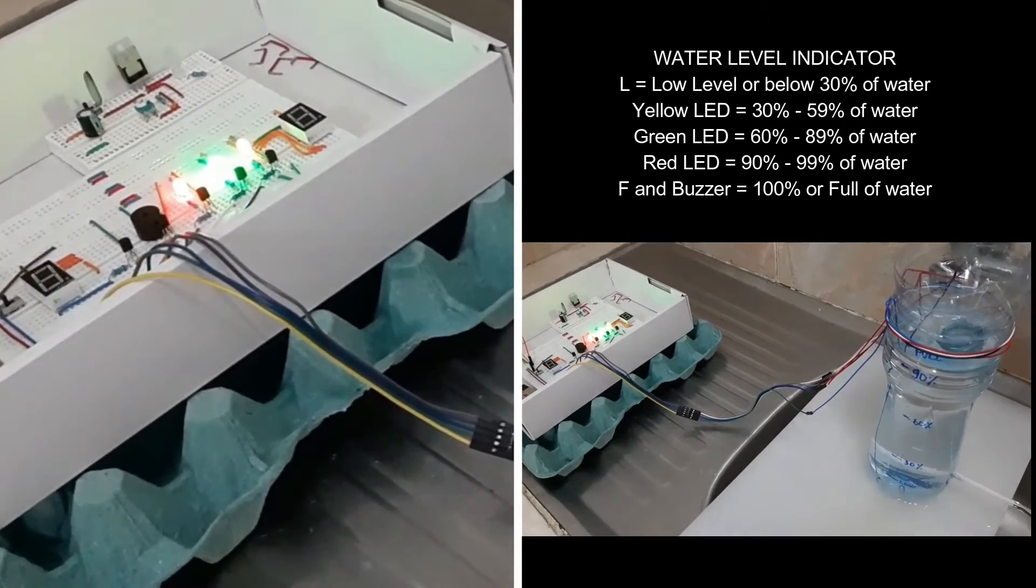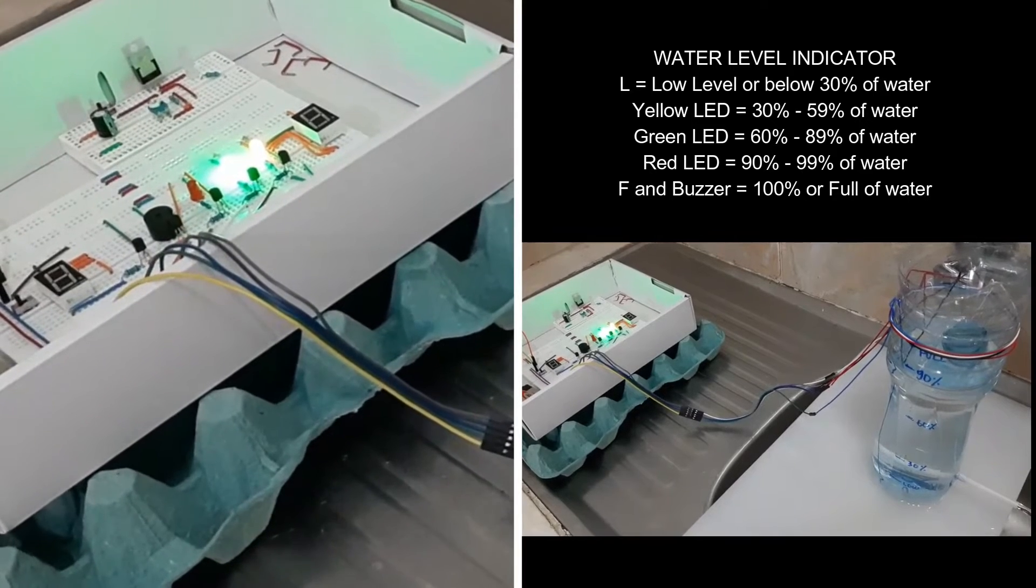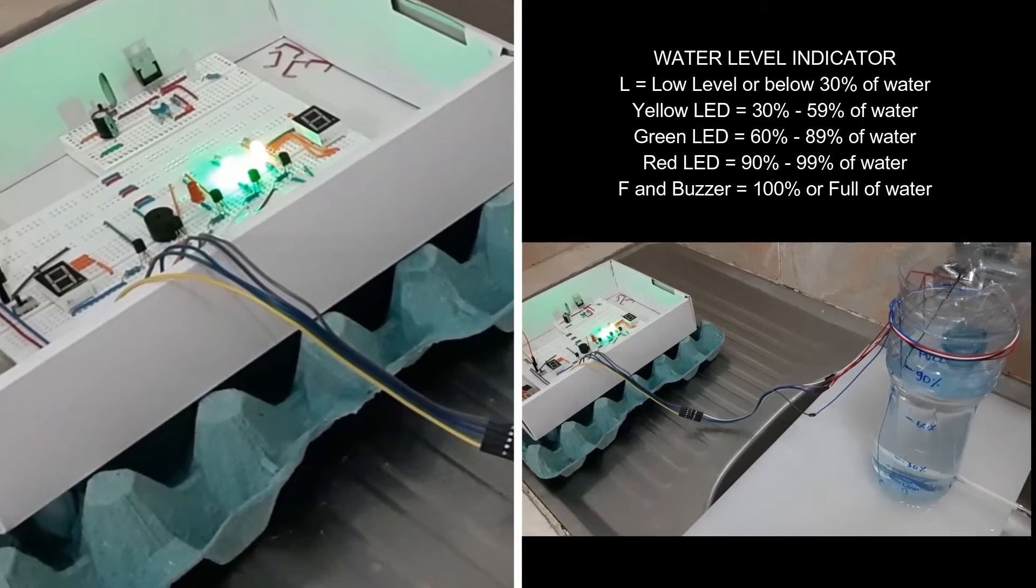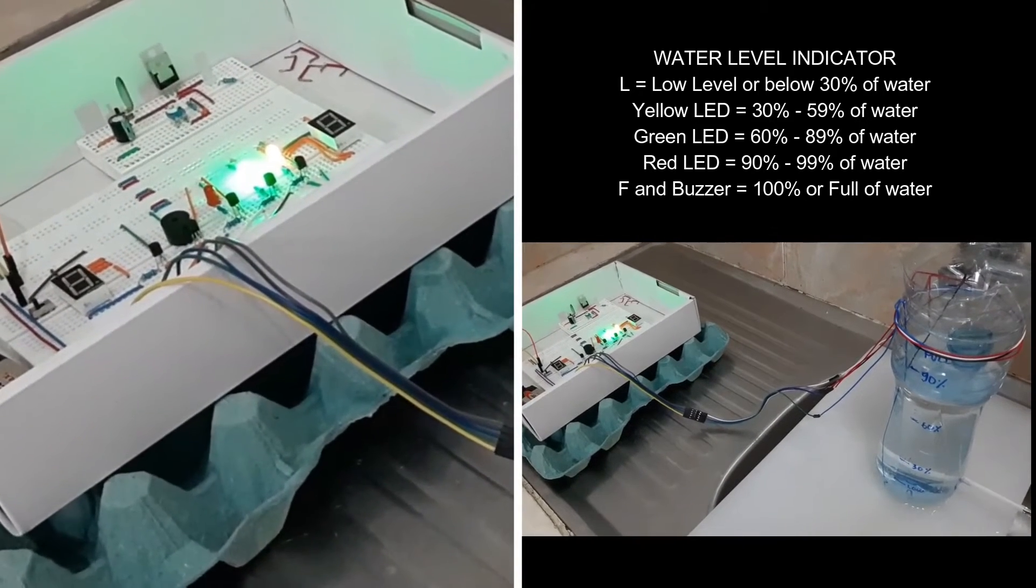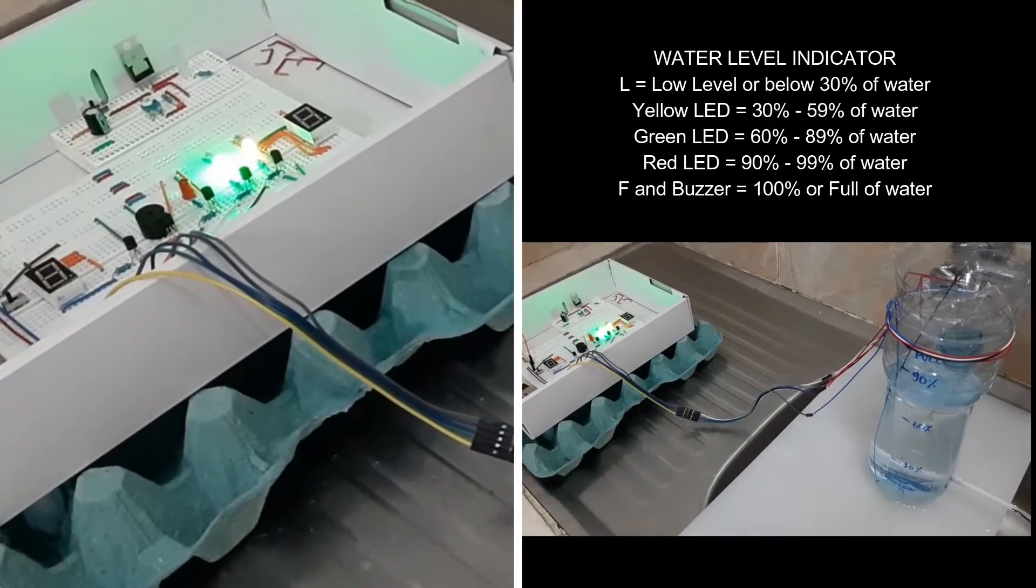When the water level is going down from 100% to 90%, 60%, 30%, the indicators letter L LED, buzzer, red LED, green LED, and yellow LED will turn off respectively.